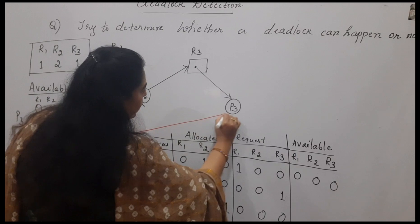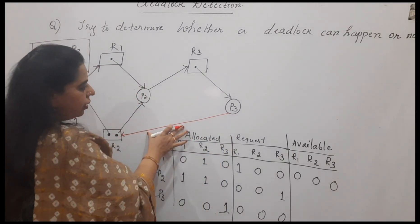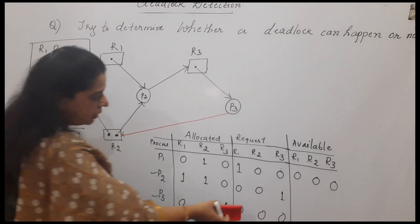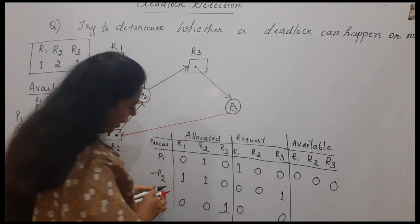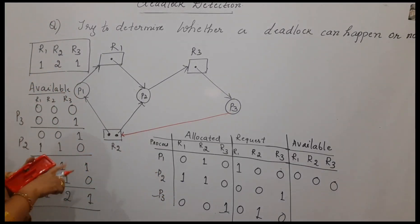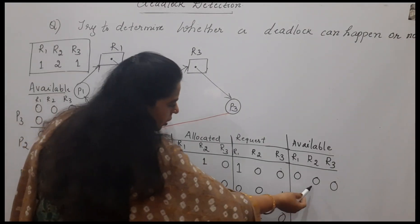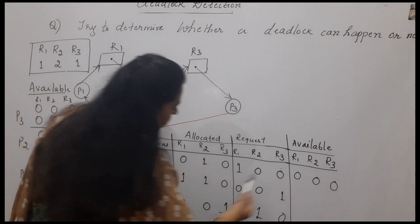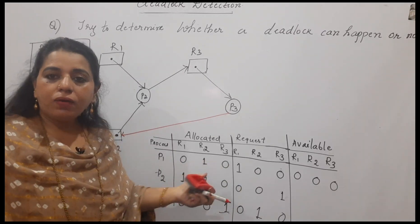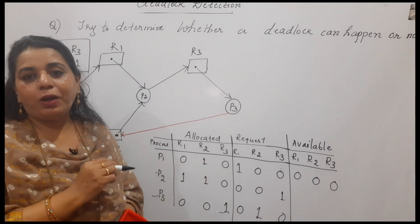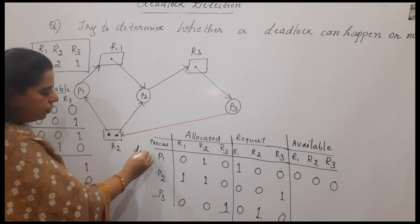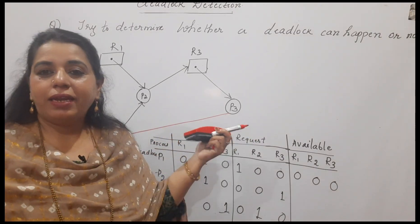Now let me make one small change to the graph: I will add an edge indicating that P3 is making a request for R2. Once I do this, the request matrix for P3 changes — it will now have a value of 1 for R2. With this change, initially nothing is available in the system: P3 is demanding R2 — not available; P2 is demanding R3 — not available; P1 is demanding R1 — not available. The system cannot satisfy the request of any process, so there is a deadlock occurring. Just one edge added to the graph results in deadlock.